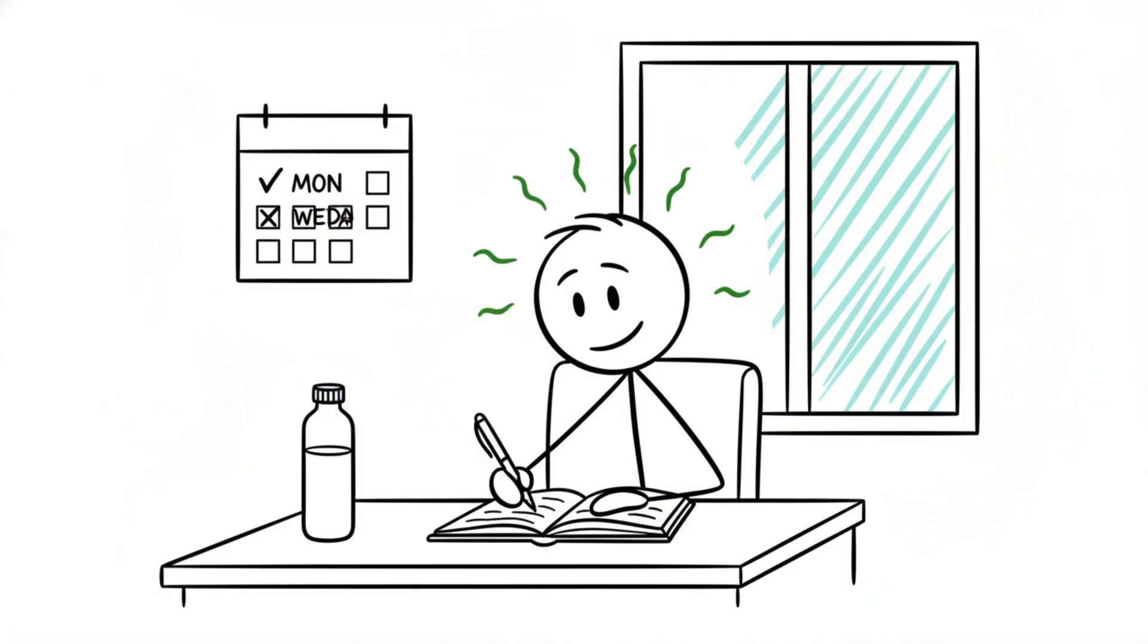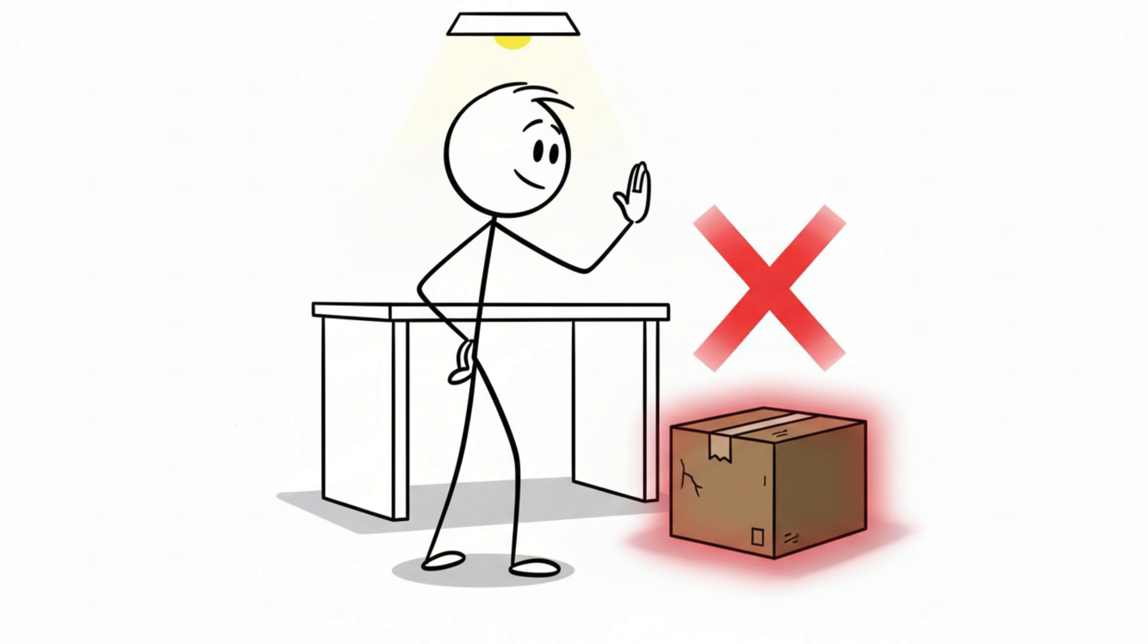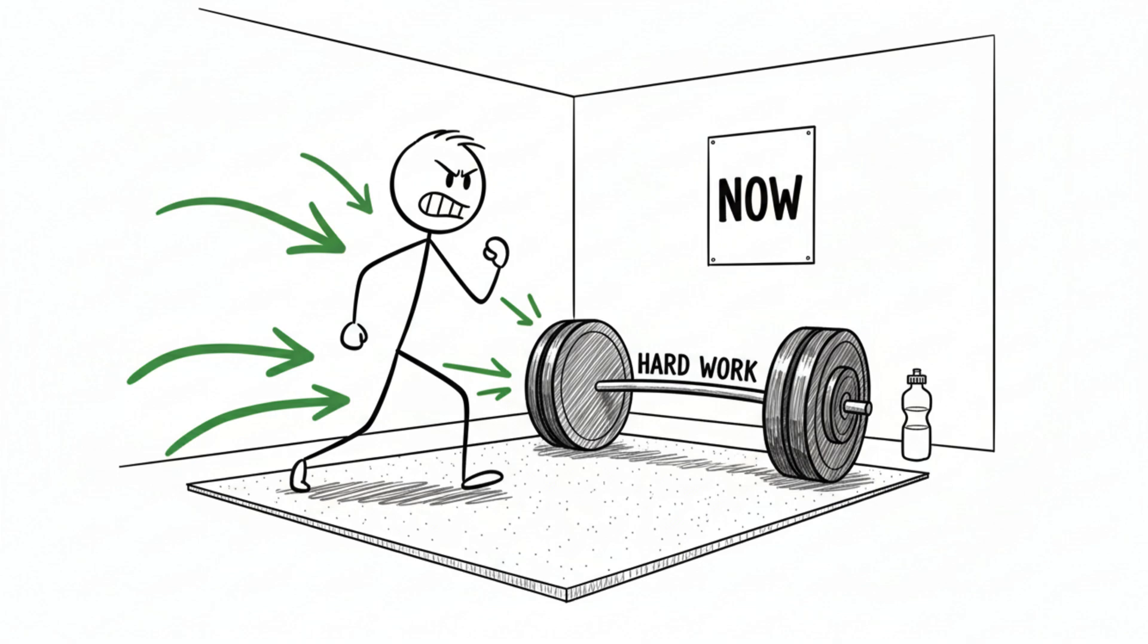Silence becomes pleasant, focus returns, and small tasks feel meaningful again. It resets your baseline and changes what your brain rewards. The only thing you cannot do is go straight back to artificial dopamine once it's over. That's the time to do hard things.